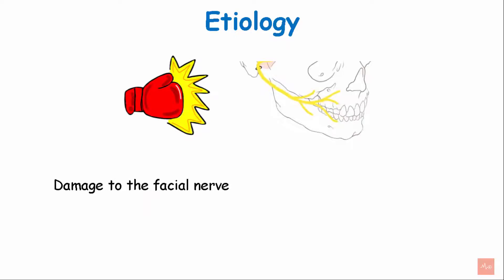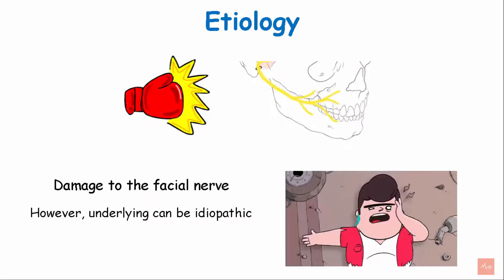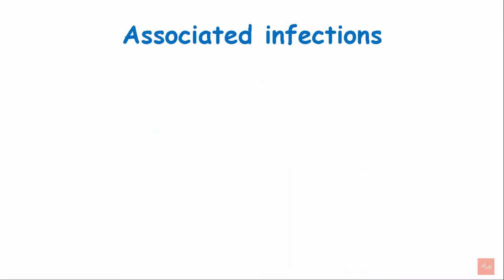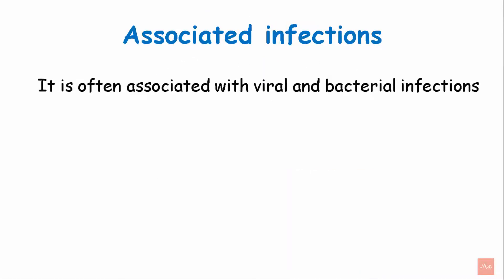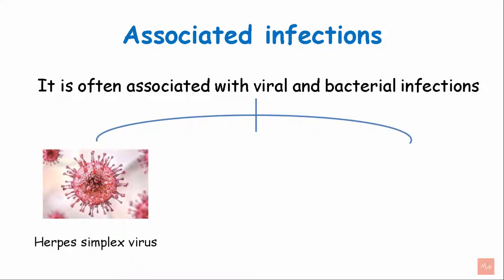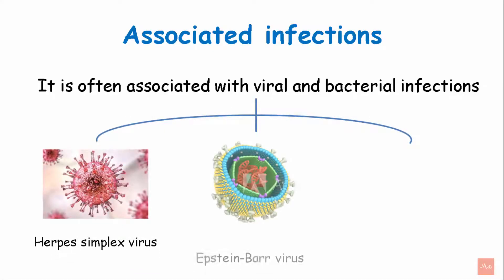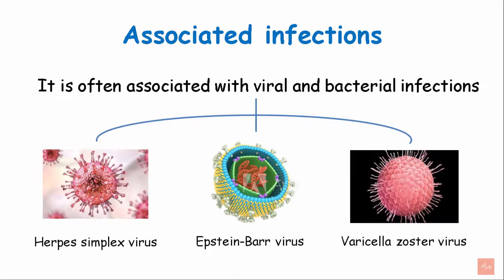Damage to the facial nerve can cause Bell's Palsy. However, the underlying cause can be idiopathic. It is often associated with viral and bacterial infections such as herpes simplex virus, Epstein-Barr virus, and varicella zoster virus.